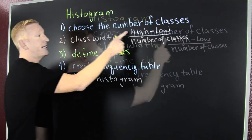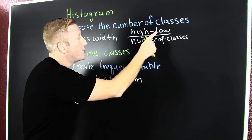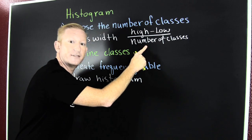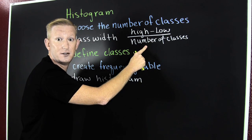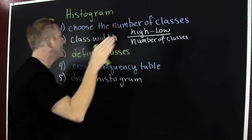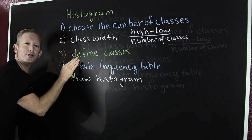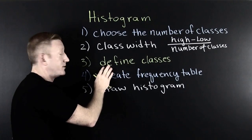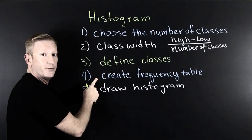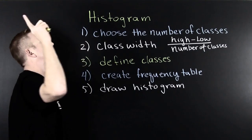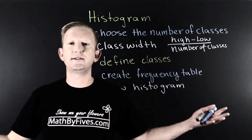We define our class width by taking the high element, subtracting off the low element, and dividing it by the number of classes. The classes was chosen in part one. Next, you're going to define the classes. This is going to go towards your frequency table, which is the next part. You're going to create a frequency table, and after that, you're going to draw your histogram.